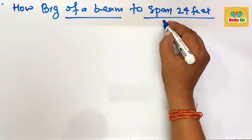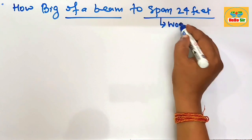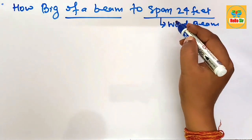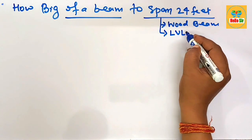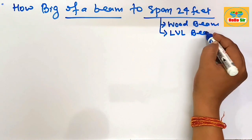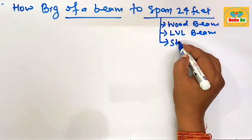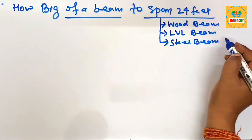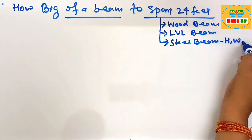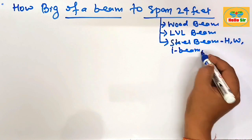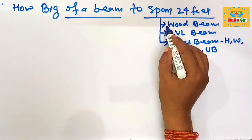There are different types of beam material. First, the wood beam — what size wood beam is required to span 24 feet? Second, LVL, known as laminated veneer lumber. Third, the steel beam, also known as H-beam, W-beam, I-beam, and universal beam — there are several names for the steel beam.